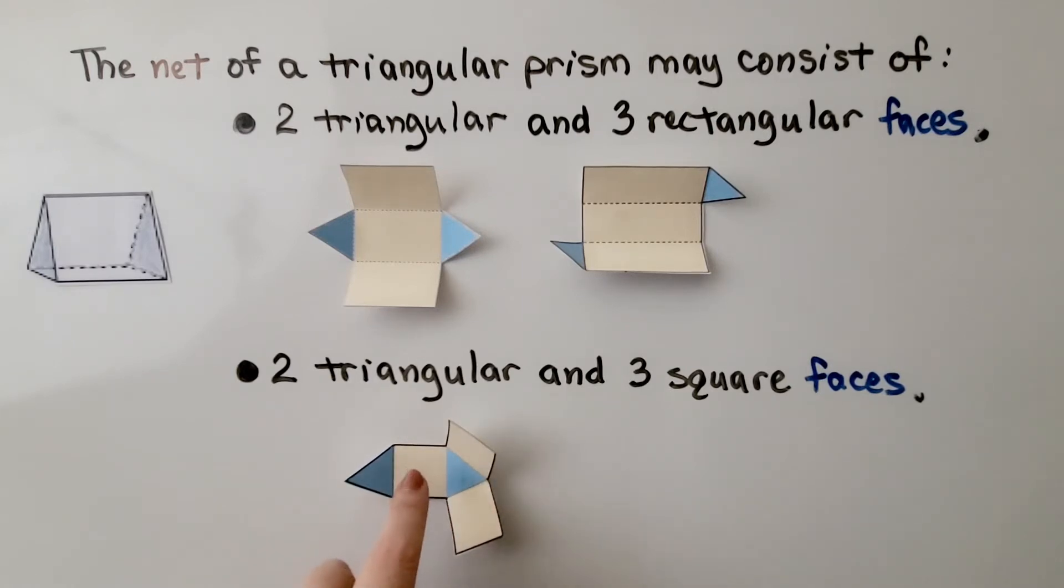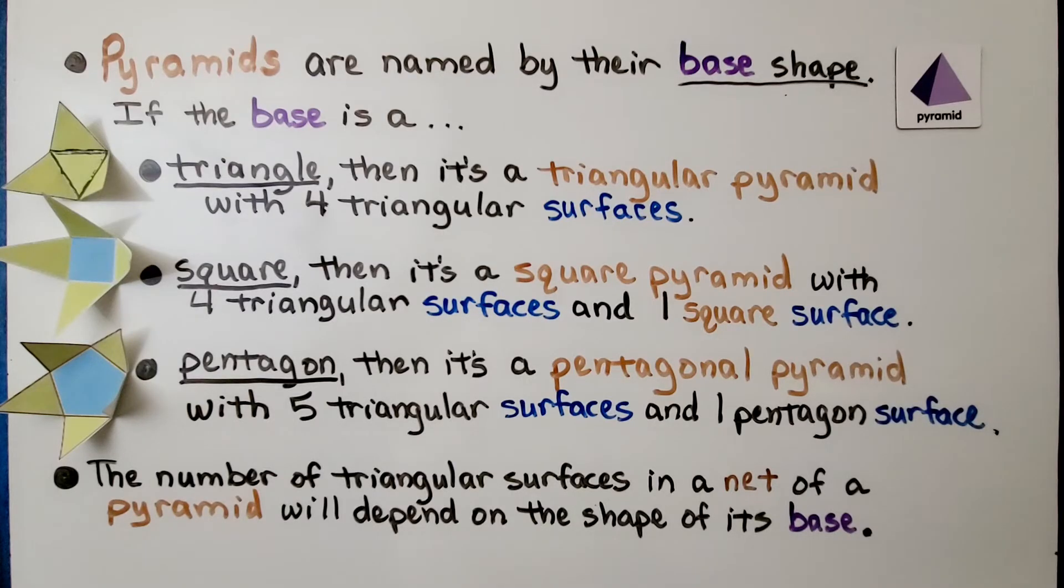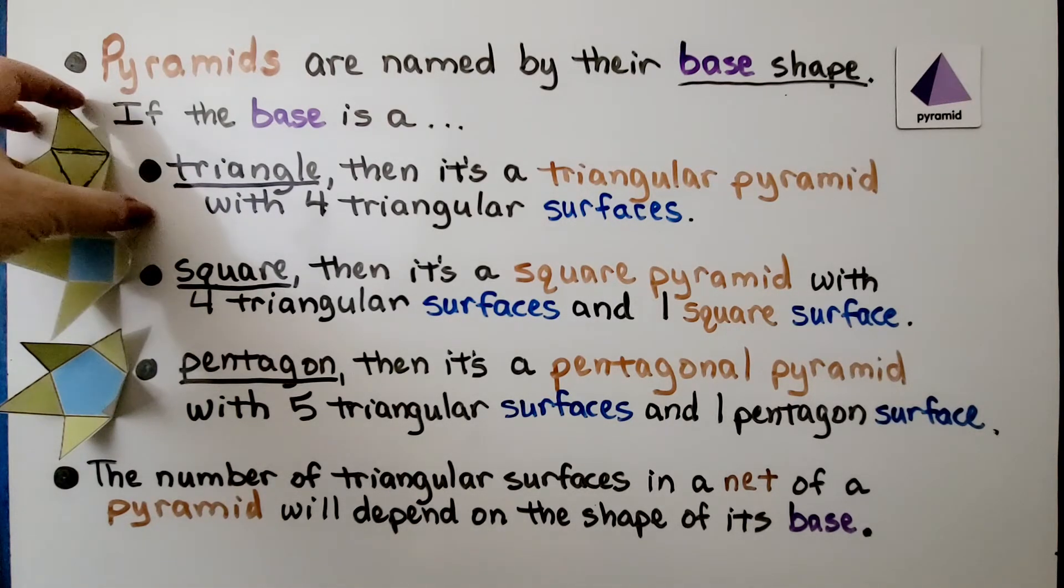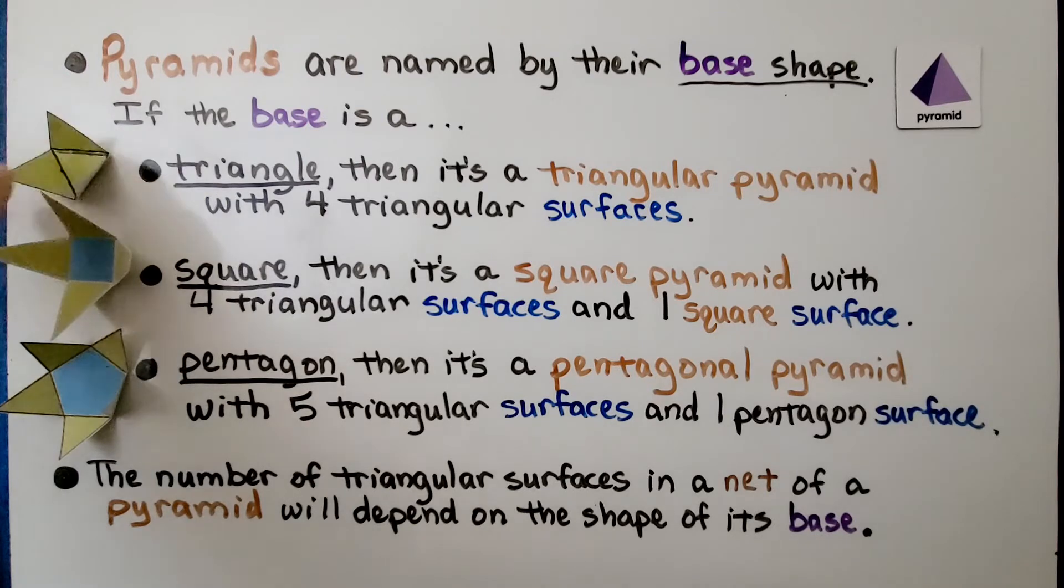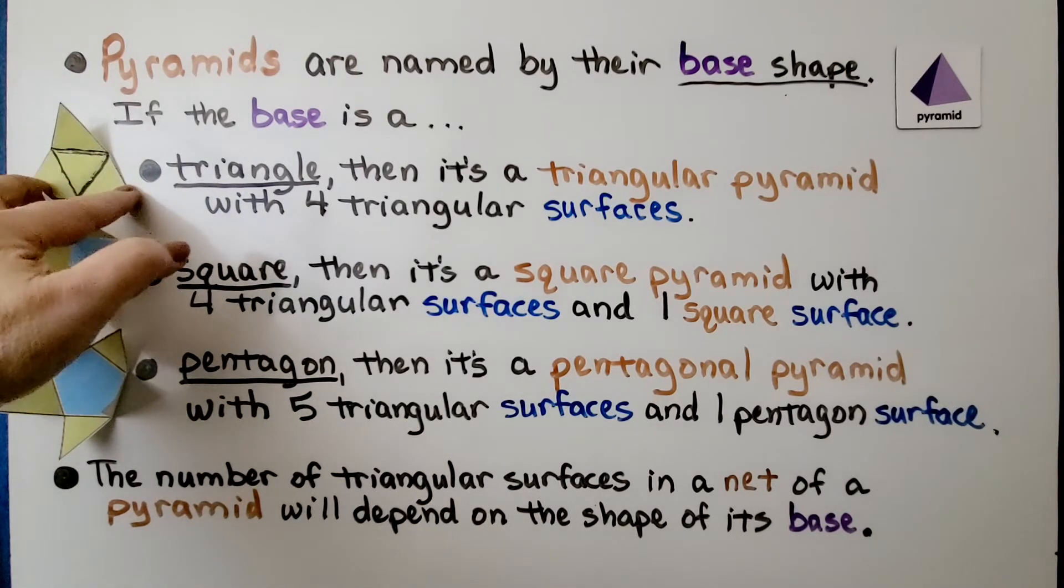This would make a triangular prism. Pyramids are named by their base shape. If the base is a triangle, then it's a triangular pyramid with four triangular surfaces.